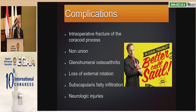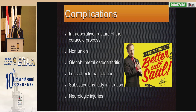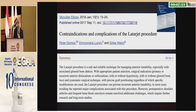Complications include intraoperative fracture of the coracoid process, non-union, glenohumeral osteoarthritis, loss of external rotation, subscapularis fatty infiltration, and neurological injuries. Contraindications and complications of the LATARJET procedure are very manageable and the procedure is very safe if you do it step by step and take care throughout.